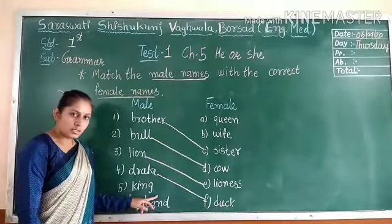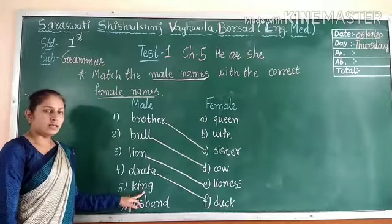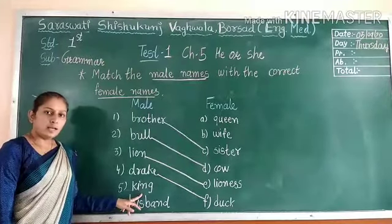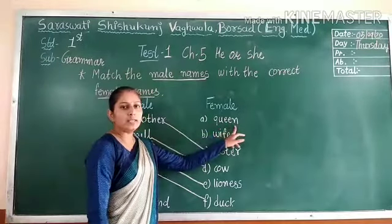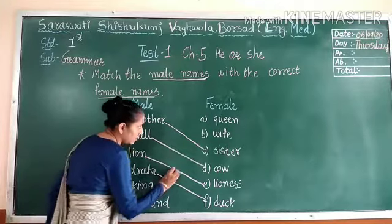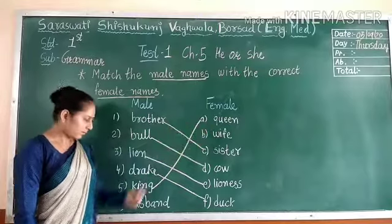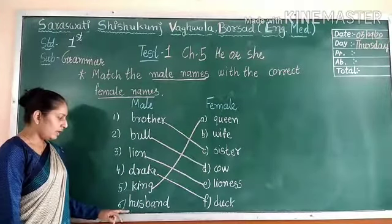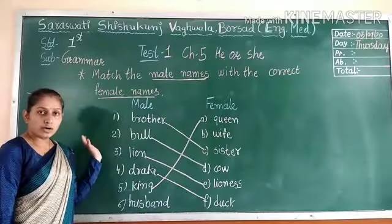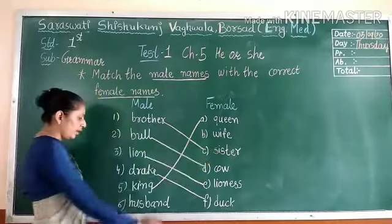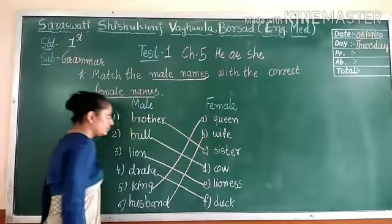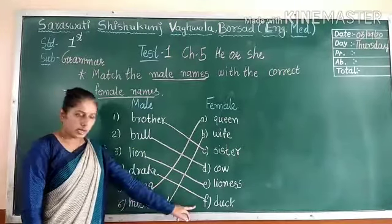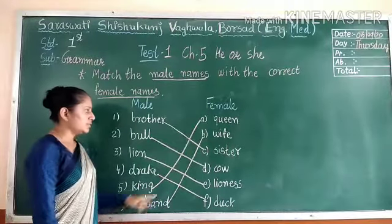Fifth: King. King is a male naming word. What is the female naming word of king? Queen. You have to match king with queen. Sixth: Husband. Husband is a male naming word. What is the female naming word of husband? Wife. You have to match husband with wife. So: brother–sister, bull–cow, lion–lioness, drake–duck, king–queen, and husband–wife.